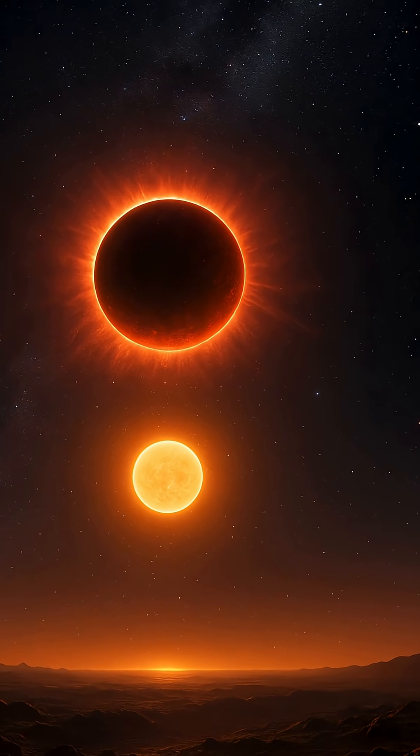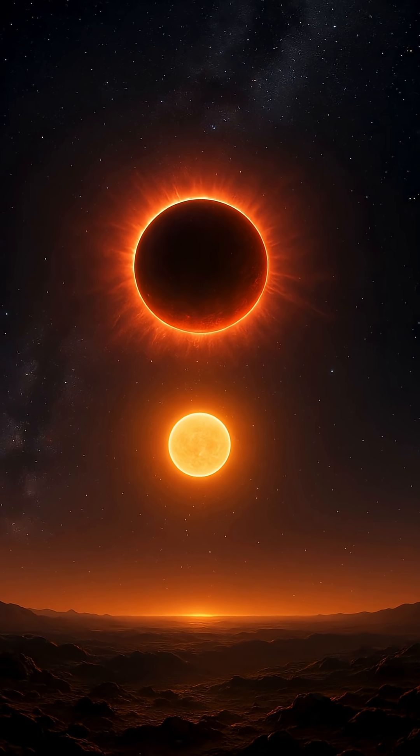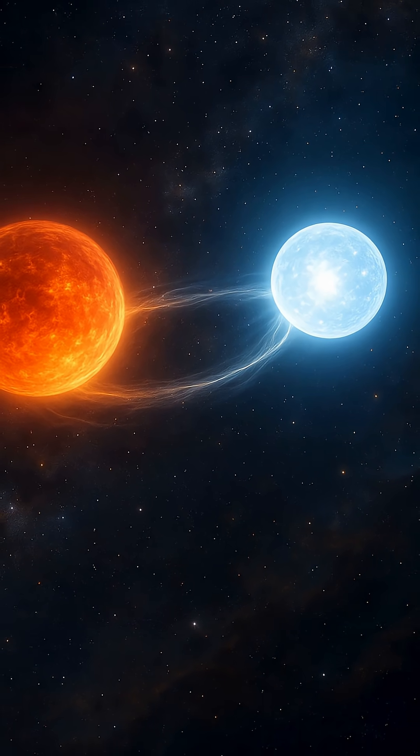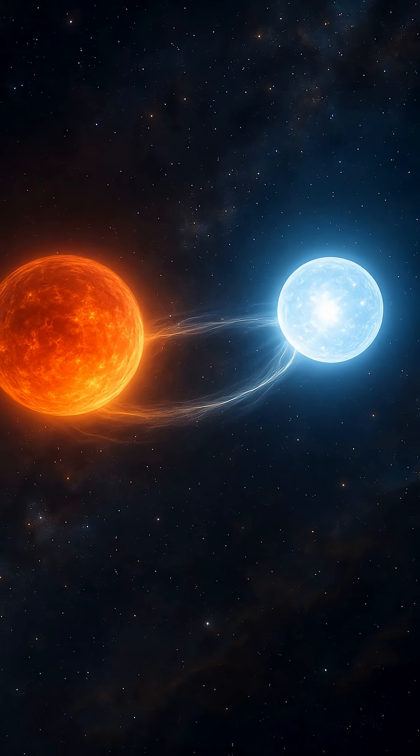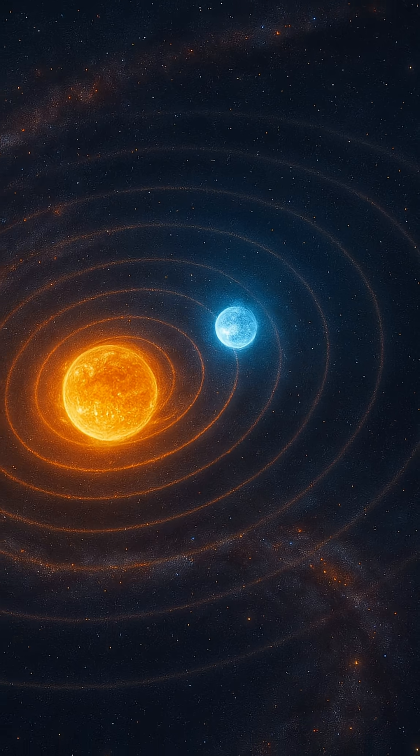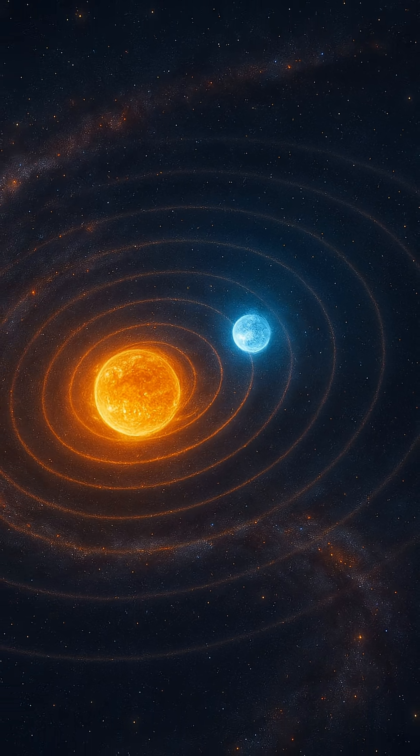Eclipsing binaries offer even more to astronomers, where one star periodically passes in front of the other from our vantage point, causing measurable dips in brightness. These systems serve as cosmic laboratories, allowing us to calculate stellar sizes, masses, and even atmospheres with remarkable precision.